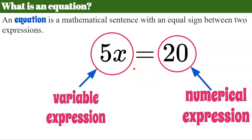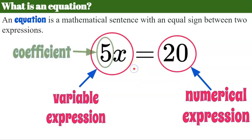One other key vocabulary word you need to understand is coefficient. The coefficient is the number or value that comes before the variable and is multiplied to the variable. There is an invisible multiplication sign between the coefficient and the variable.